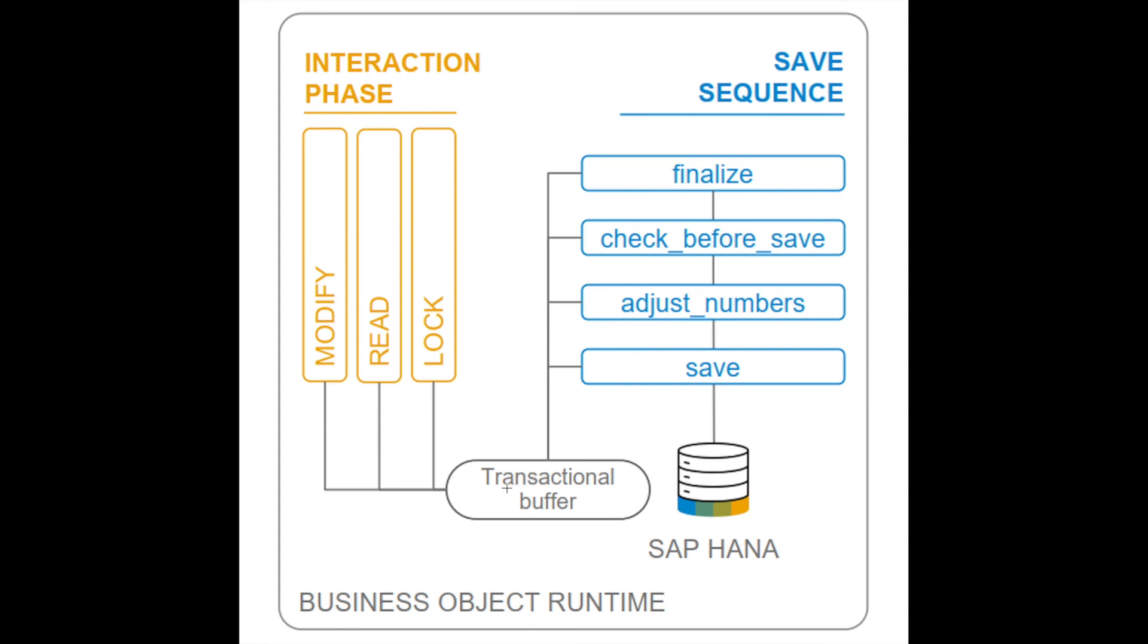It will not directly update to the database until the save sequence is triggered. After the save sequence is triggered, the corresponding methods will get triggered. So this is for validation and numbering purposes. This in turn will check all the transactional data, and if any error is there then it will not update anything to the database table.